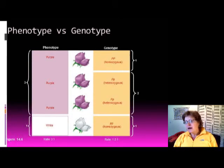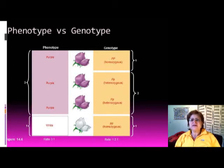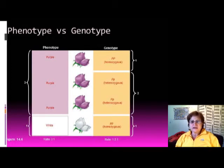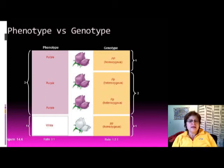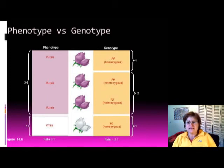This is the third segment of the evolution chapter, picking up at the phenotype versus genotype picture. The phenotype is the characteristic — for example, the color of the plants — and the genotype shows the different genes.